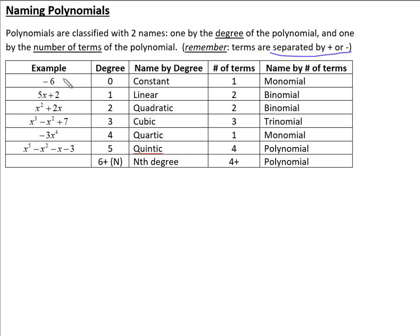So let's look at our first example. There's no x, so x would be to the zero power — we say this is degree zero, and the name for that is constant. We only have one term, so that's called a monomial. Mono means one, and nomial means number of terms — it's kind of blended together.